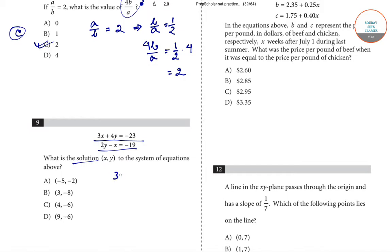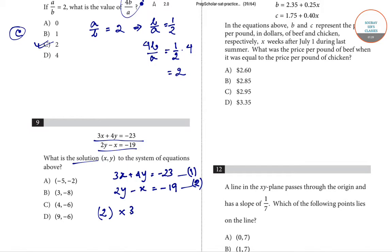To solve these equations, we write them down again: equation 1 is 3x + 4y = -23, and equation 2 is 2y - x = -19. We multiply equation 2 by 3 to get 6y - 3x = -57, which becomes equation 3.